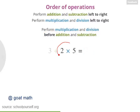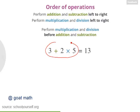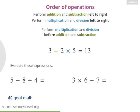You should perform all the multiplication and division operations before adding and subtracting. So first, you should evaluate 2 times 5, which equals 10. Then you can add 3 and 10 to get 13. So this expression actually equals 13. You should still perform these operations from left to right, but order of operations says to evaluate the multiplications and divisions first. Try evaluating these two expressions, which combine some of these operations.